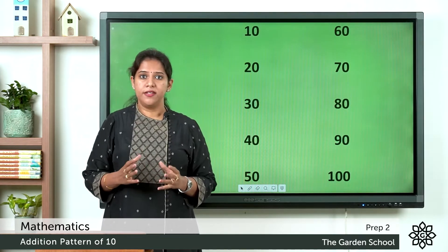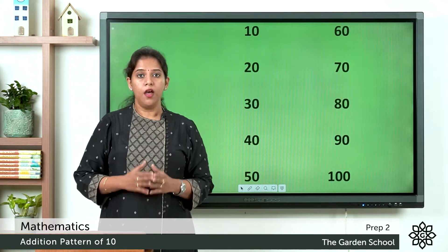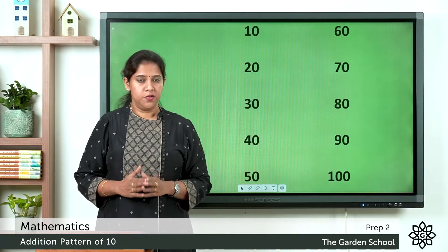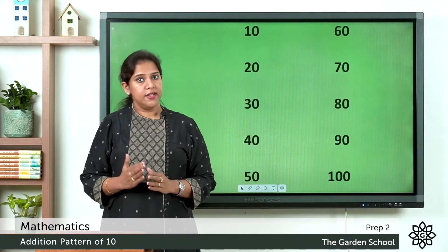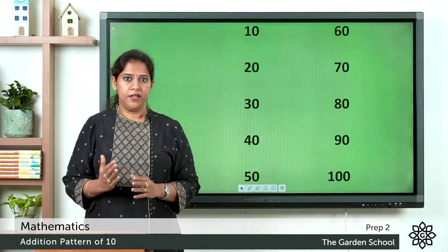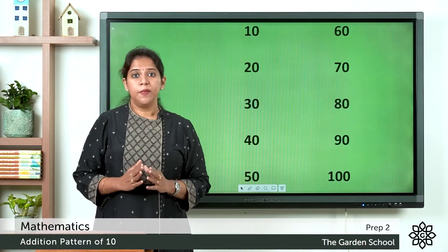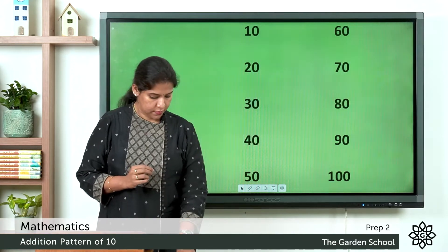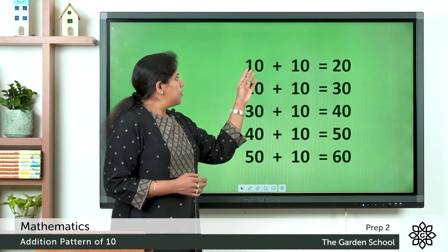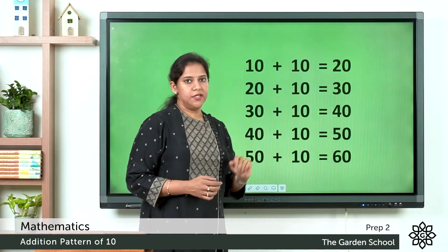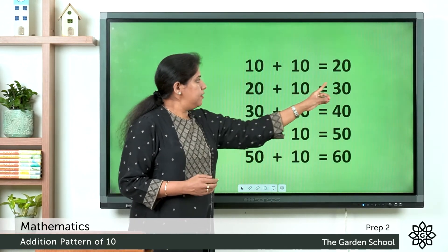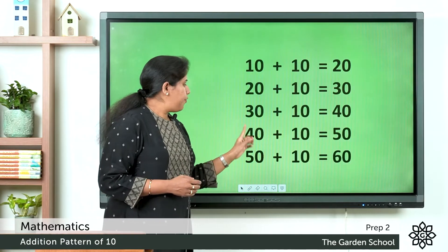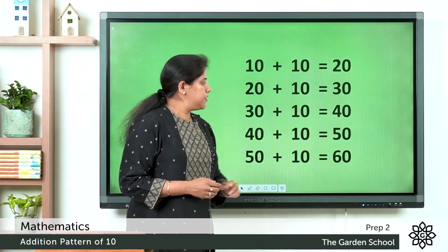Let's learn how to write the addition pattern. Addition pattern of 10: 10 plus 10 is 20. 20 plus 10 is 30. 30 plus 10 is 40. 40 plus 10 is 50.